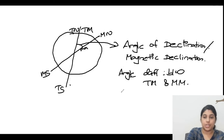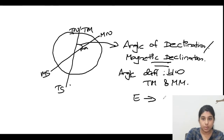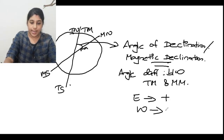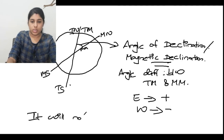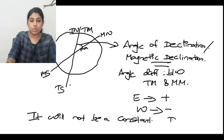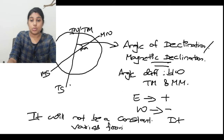Magnetic declination towards the east direction is considered positive, and towards the west it is considered negative — this is important for calculation purposes. Also very important: the magnetic meridian is not constant. It varies from time to time.